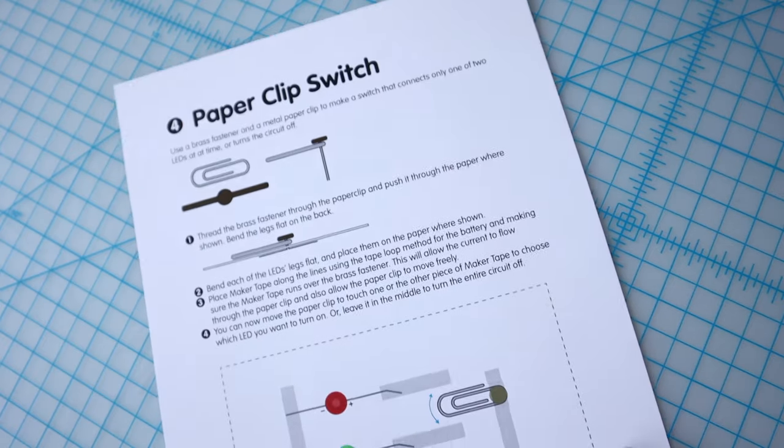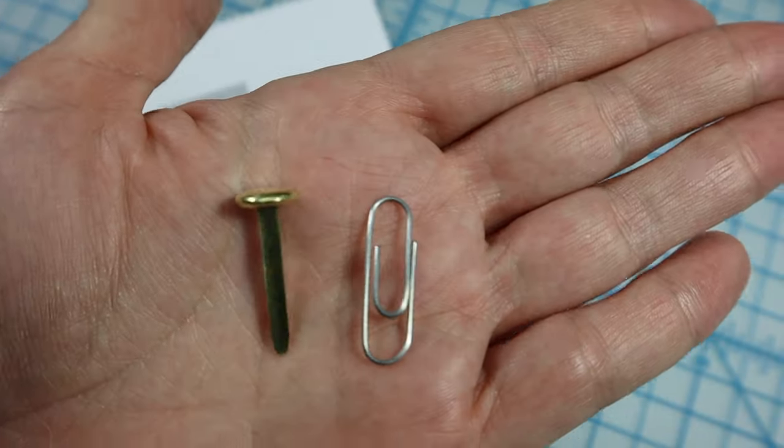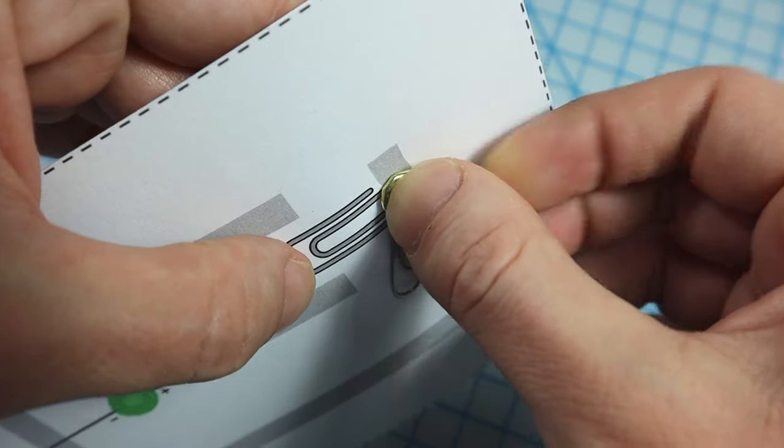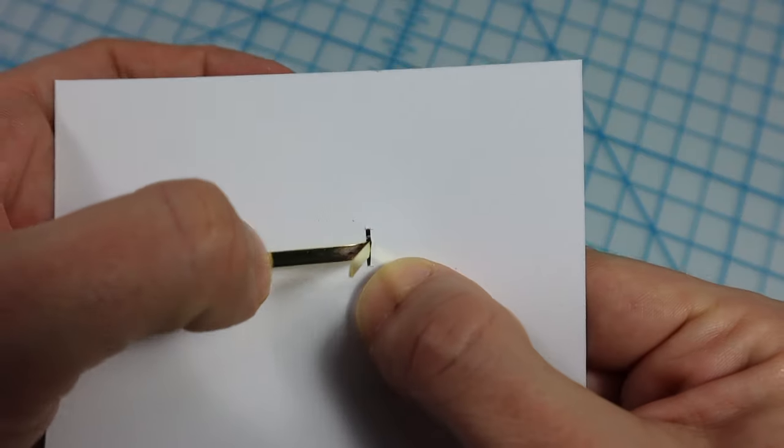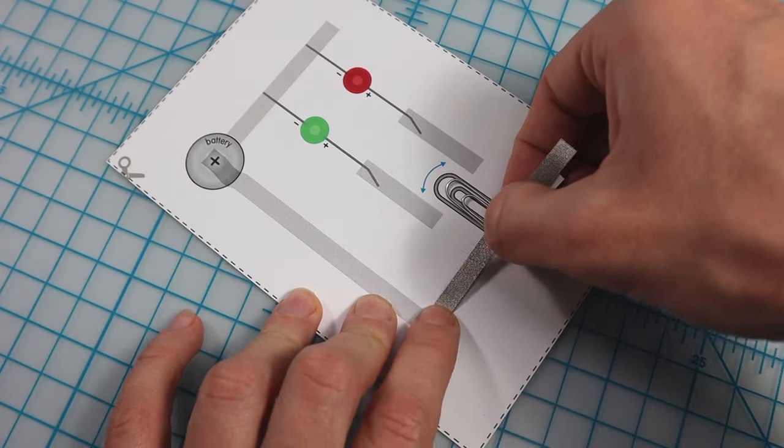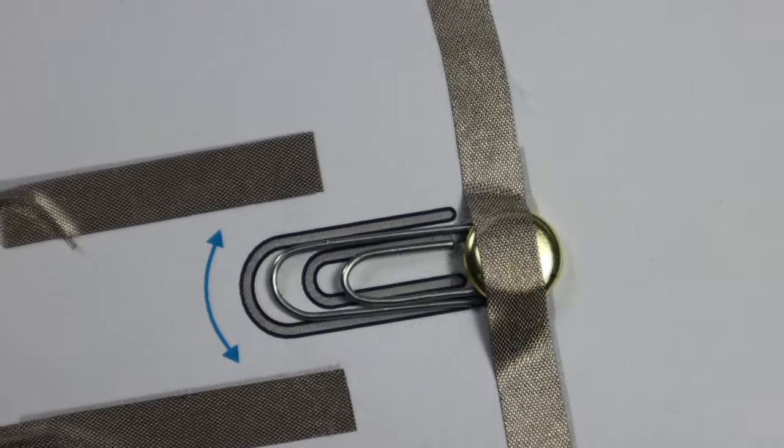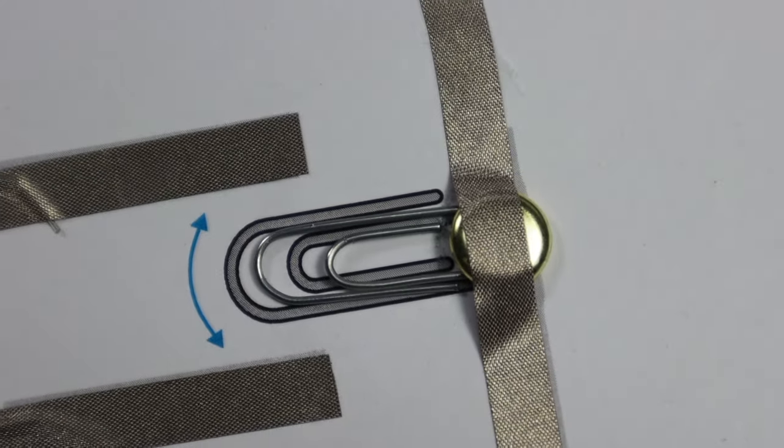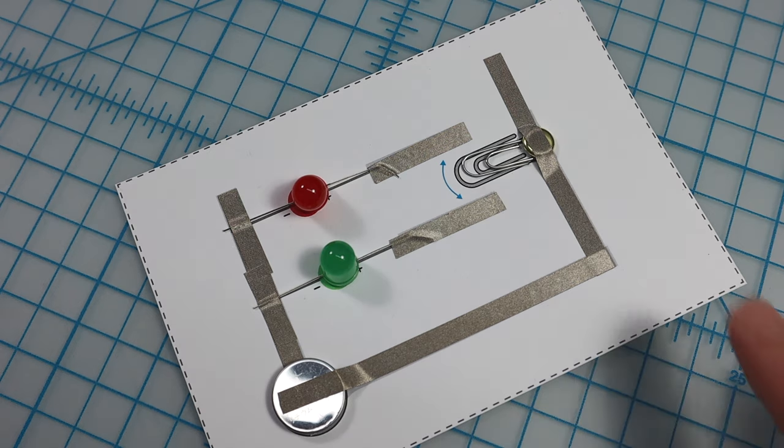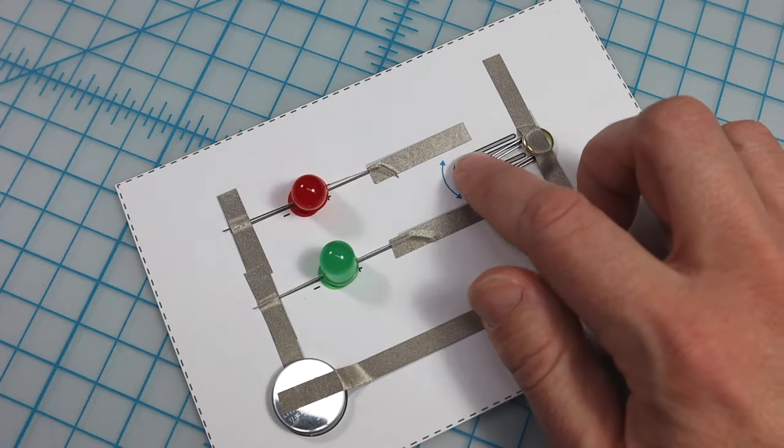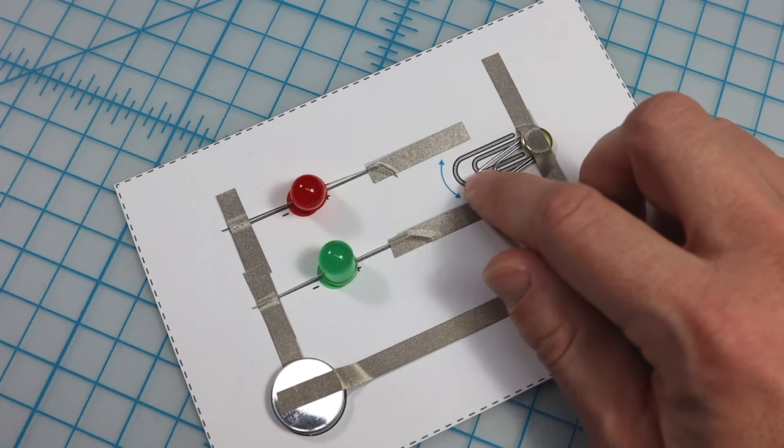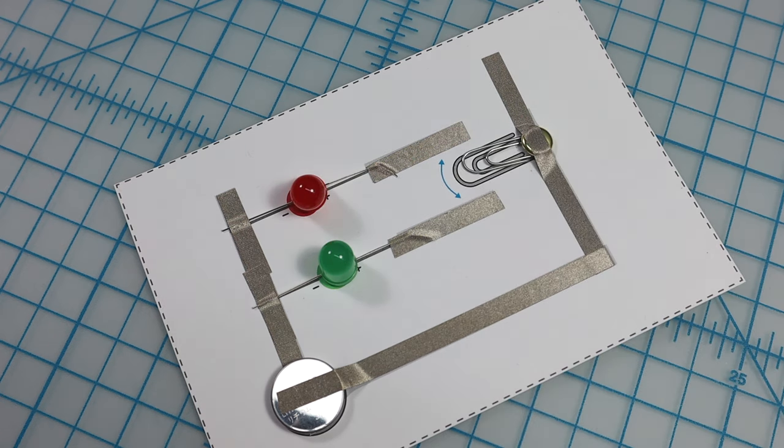Here's another fun example switch. For this one, we'll need a brass fastener and a paper clip. Thread the brass fastener through the paper clip and push it through the paper. Turn the paper over and bend the legs flat. Place Maker tape along the line and run it over the brass fastener. This will allow the current to flow through the paper clip and also allow the paper clip to move freely. Now, move the paper clip to touch one piece of Maker tape or the other to choose which LED you want to turn on. Or leave it in the middle to turn the entire circuit off.